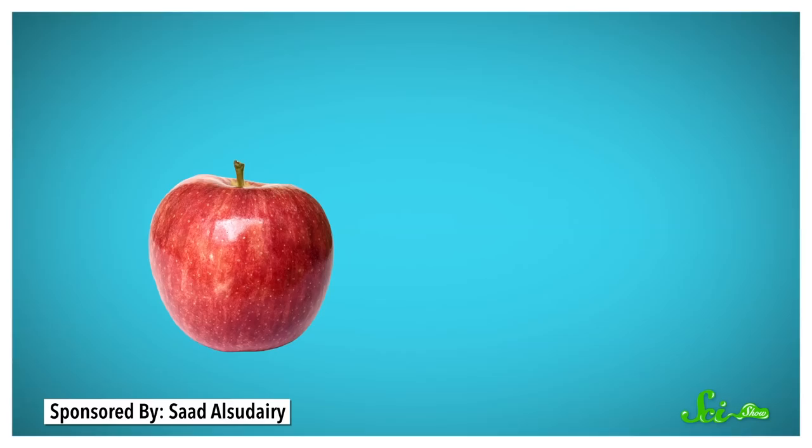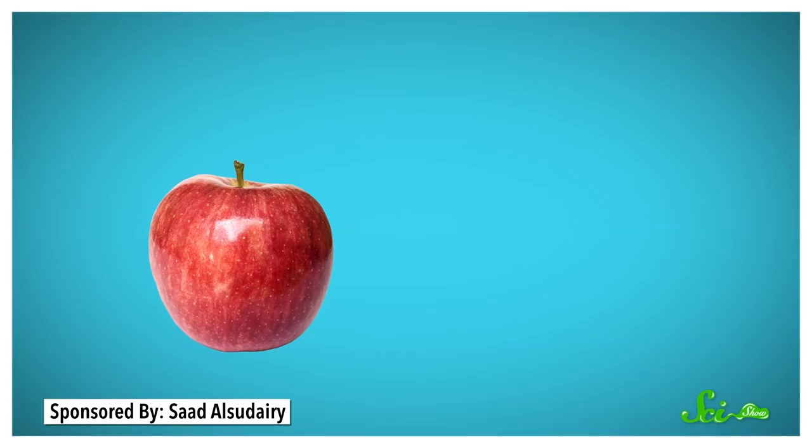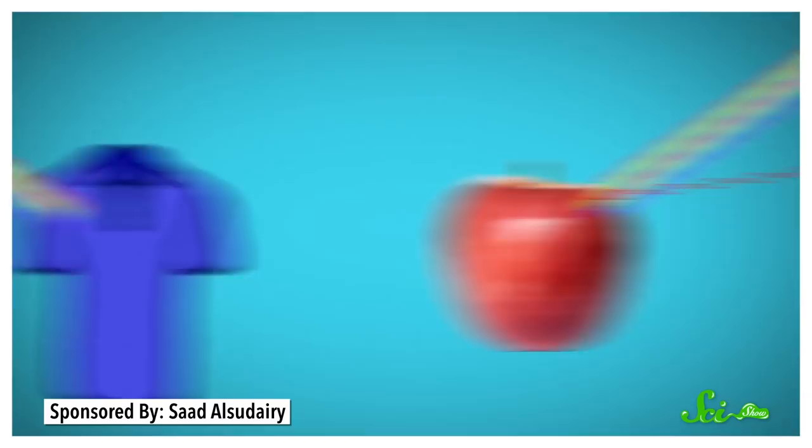The color of something depends on how that object absorbs and reflects light. A red apple, for instance, looks red to us because it reflects the long wavelengths of red light and absorbs the rest. But a blue shirt is reflecting shorter wavelengths of blue light.